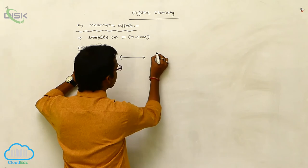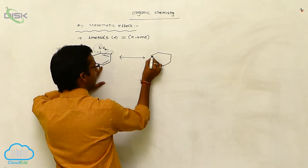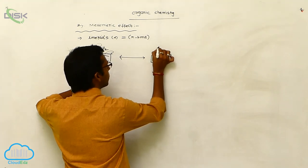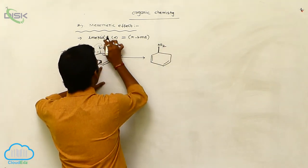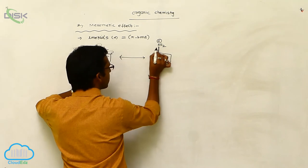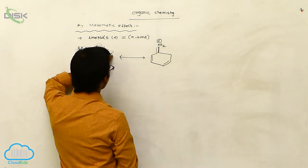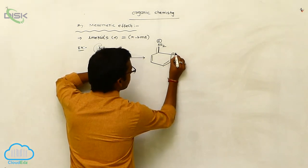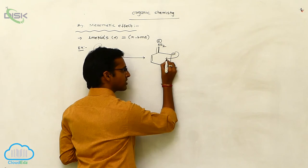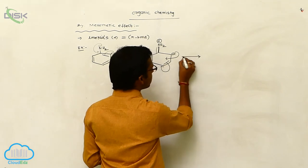Now represent the resonating structures of aniline. Here, two pi bonds are not participating in resonance. The NH2 group is shifting — you get a positive charge. This lone pair is shifted towards the ring; the single bond is converted to a double bond. The pi bond is transferred and you get a negative charge. These excess electrons are shifted to the inner side, and this pi bond shifts towards the carbon.